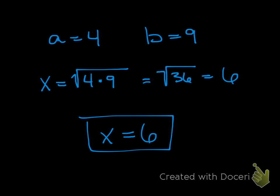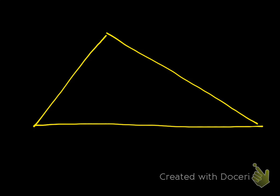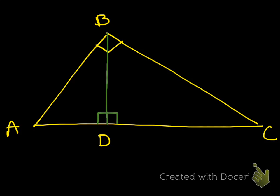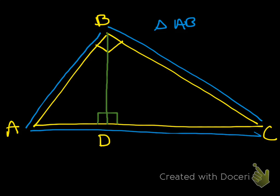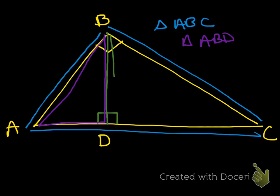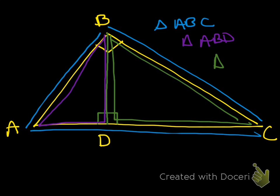Now we're going to talk about how geometric mean relates to right triangles. We've got this right triangle sitting on its hypotenuse — triangle A, B, and C. I'm going to draw an altitude from the right angle B down to AC at a perpendicular, and label that point D. Basically what I've created is three right triangles: triangle ABC, triangle ABD, and triangle BDC.